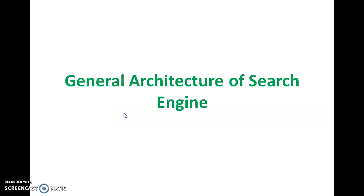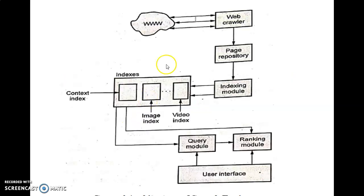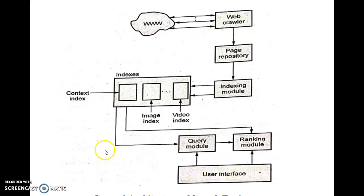In this video we are going to see about the general architecture of a search engine. This is the general architecture of a search engine. We have the worldwide web (www), we have a web crawler, then pages repository, indexing module which can be content, image, or video index, and then we have the query module, ranking module, and user interface. This is the overall general architecture of a search engine.